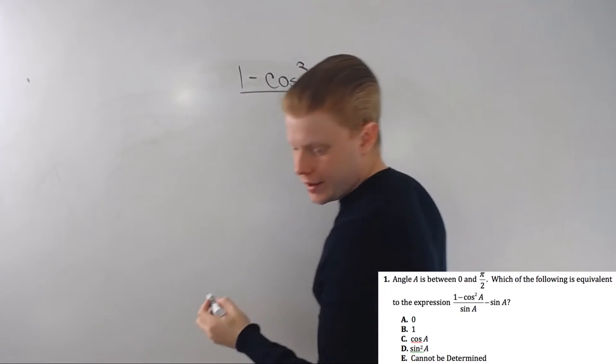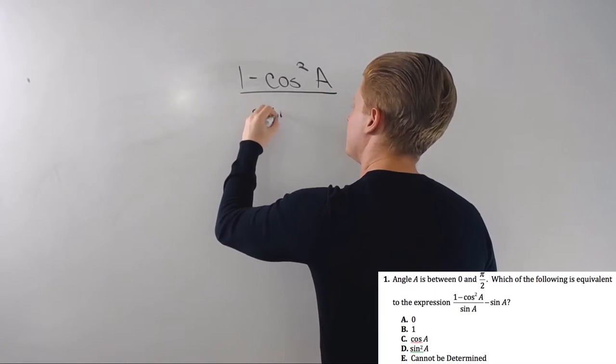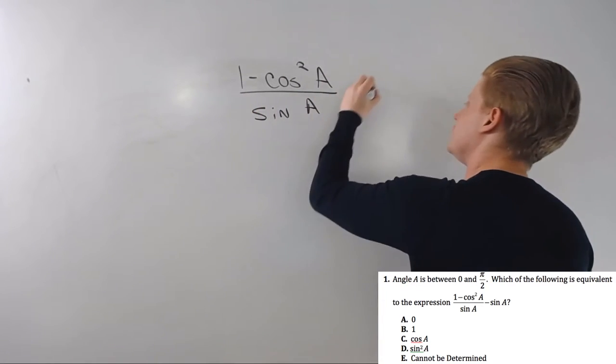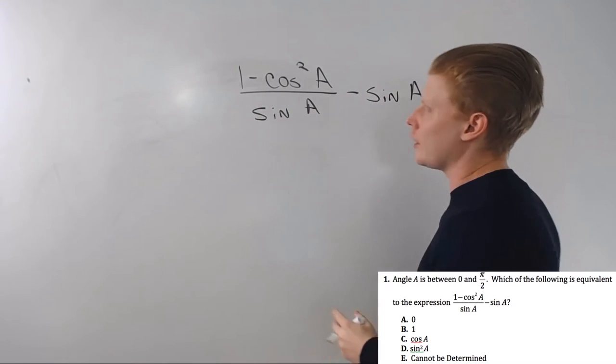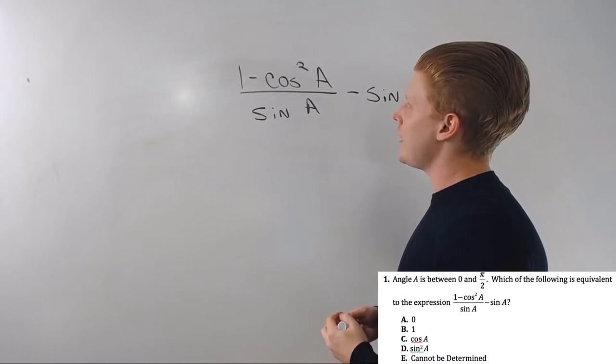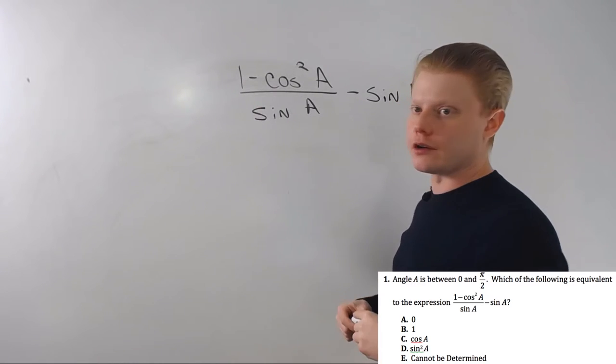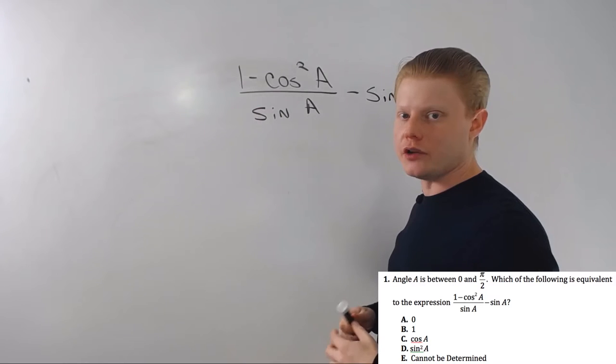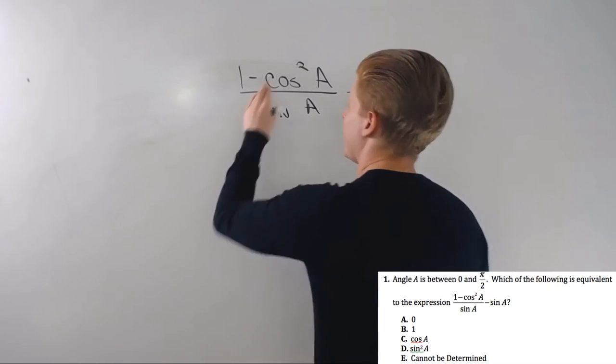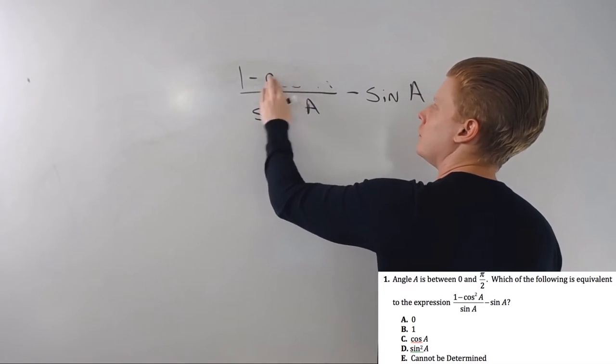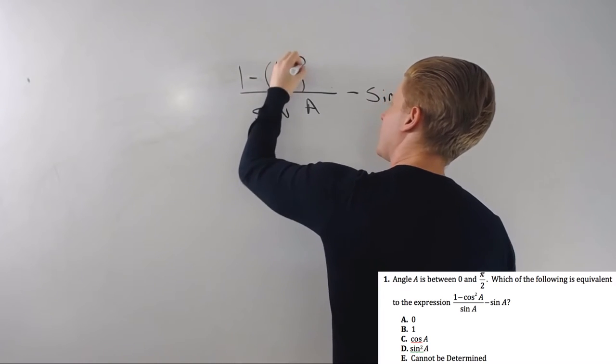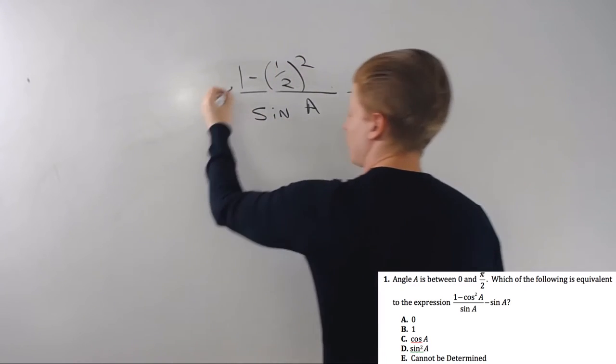You just pick an angle that's easy to work with, and because you're going to have your calculator, you can just start plugging it in and finding out what stuff is. So let's say I pick 60 degrees because the cosine of 60 is a nice round number—it's one half.